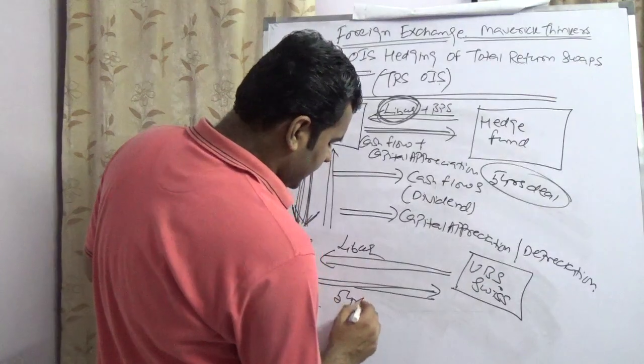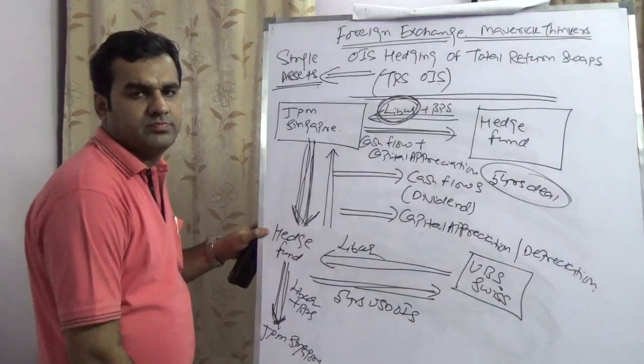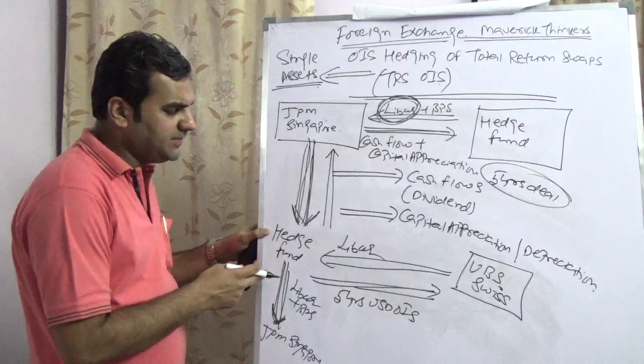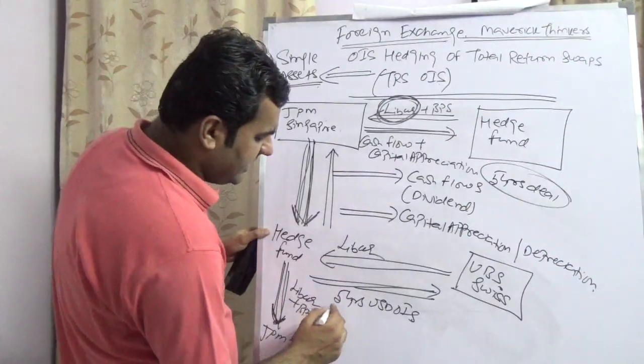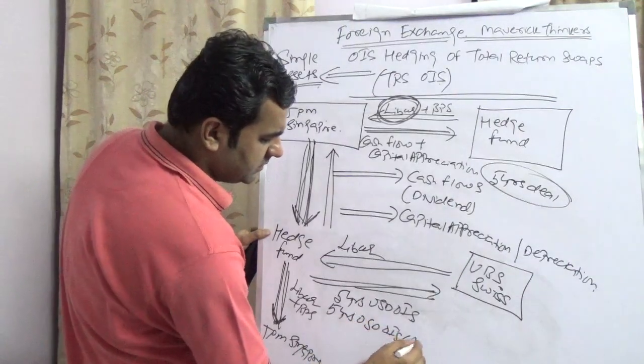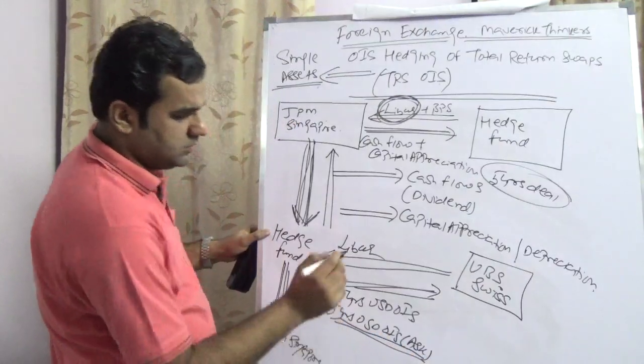Now my LIBOR risk gets cancelled. In return, I would pay you five-year USD OIS. This is a liability, so he would pay five-year USD OIS ask to the bank.